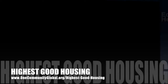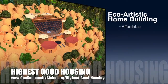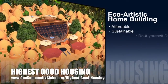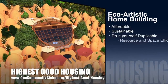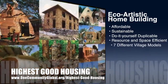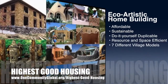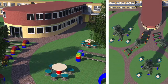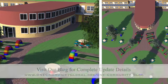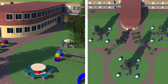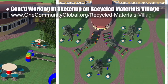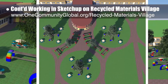The One Community approach to highest good housing is eco-artistic home building that is affordable, sustainable, do-it-yourself duplicable, resource and space efficient, and consists of seven different sustainably constructed village models. This week, the core team — which includes the pioneer members plus those helping who don't wish to be individually acknowledged — continued SketchUp design for the open source outdoor areas of the recycled materials village, pod six.